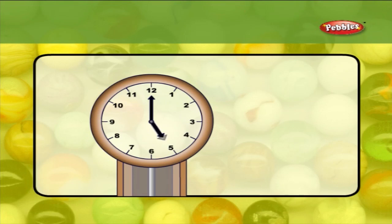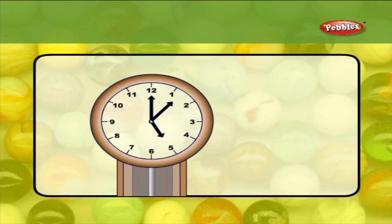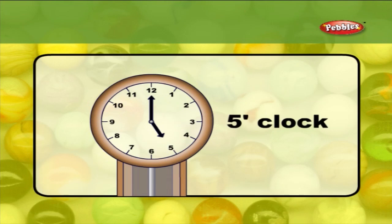The shorter hand denotes the number of hours and is called the hour hand. The longer hand shows the minutes and is called the minute hand. The minute hand has to complete one full round of the clock to make an hour. In this clock, the short hand points towards 5 and the long hand points towards 12. So, the time is 5 o'clock.